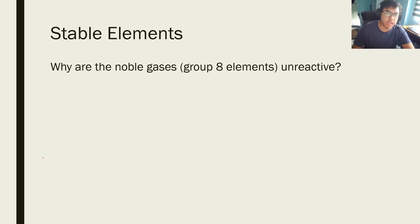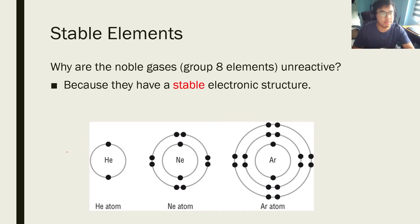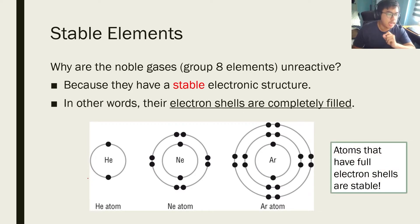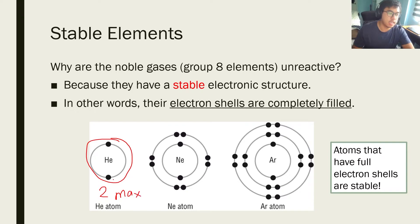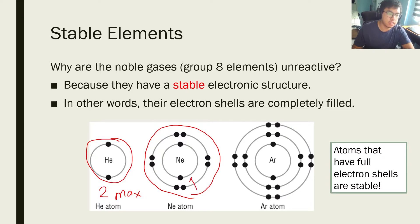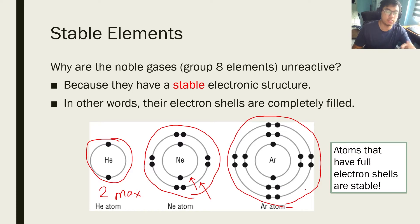So why are they not reactive? That is because they have what we call a stable electronic structure — that means the electronic structure of these elements are all completely filled. Helium has one shell only, and that shell is full; you can only fit two electrons in the first shell. Neon has 10 electrons and all those 10 electrons completely fill the first and second shells, so neon has a full electron shell. Argon has 18 electrons and three shells, all three of which are full: two electrons in the first shell, eight in the second shell, and another eight in the third shell. So all of them have full electron shells, and this is what we mean by stable.